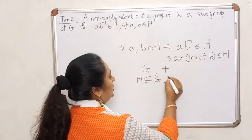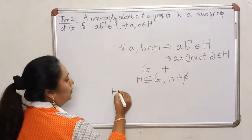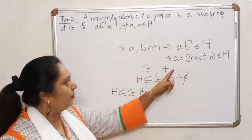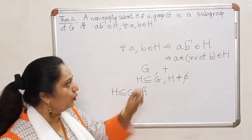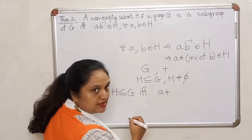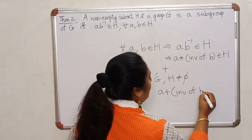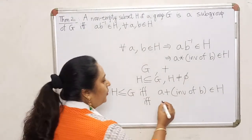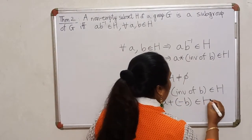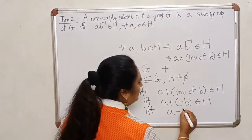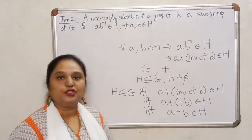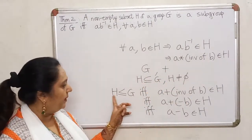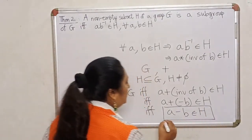For a specific example where the binary operation is addition: suppose H is a non-empty subset of G. Then by Theorem 2, H will become a subgroup of G if and only if A★(B inverse) lies inside H. But when the group operation is addition, a better notation for the inverse is minus B. So the condition becomes: A minus B must lie inside H.